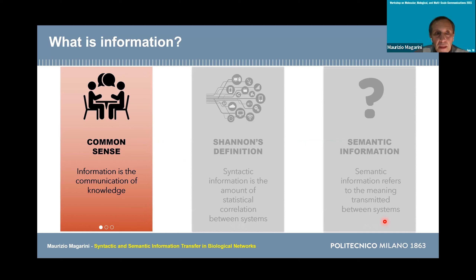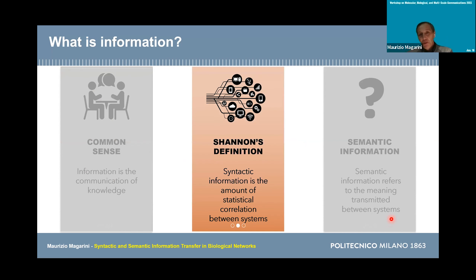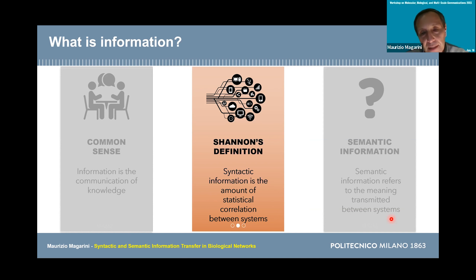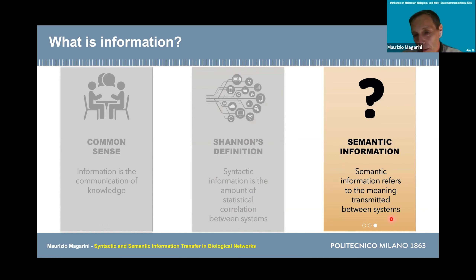If we start with the question, what is information? Information is related to the communication of knowledge. But we know from Shannon theory that as engineers we characterize information in a syntactic way, describing phenomena probabilistically. What is missing — and this was recognized by Shannon himself — is that we don't account for the semantic aspect of information. There is a lack of attention to the importance of the message being transferred.